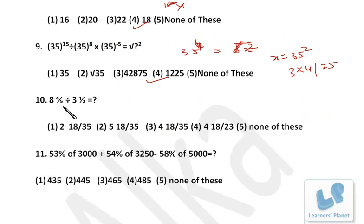Now this 4/5 is actually 0.8 and 1/2 is 0.5, so precisely it is 8.8 by 3.5, or we can say 88 by 35. So 35 times 2, and then remainder is 18 by 35. It's very simple.